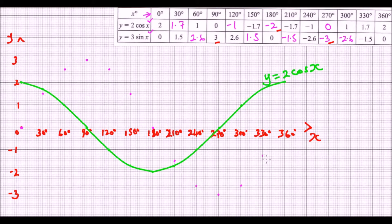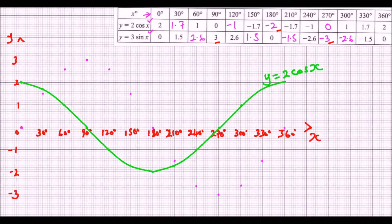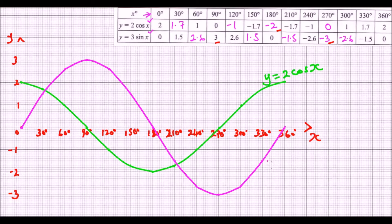These are the points we are going to use. Connect these points using your freehand to come up with the graph of y = 3sin(x). Label the graph y = 3sin(x). That is what we are supposed to do for part B.